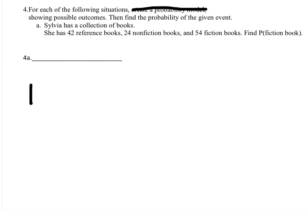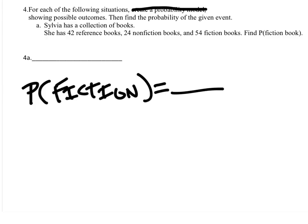Well, the probability of fiction will certainly be a fraction, and we can see right now that there are 54 fiction books. But how many books are there total? Well, if we add all of these, we get 120.